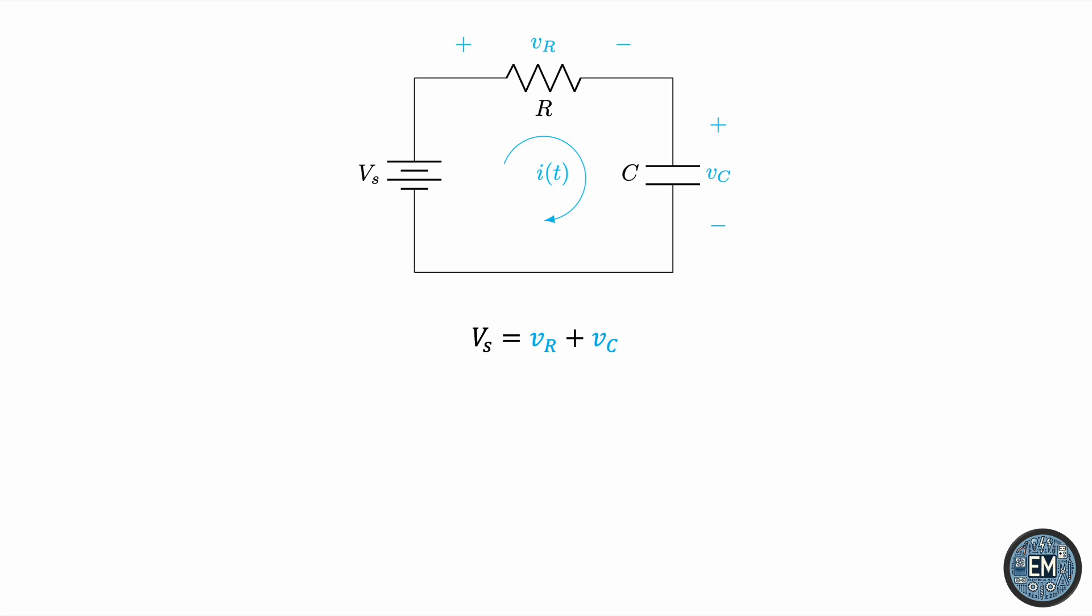VR by Ohm's law is given by the resistance times current. Because the resistor and capacitor are in series, this current must be the same current flowing through the capacitor, or to be precise, the displacement current of the capacitor, which is given by the capacitance times the time derivative of the voltage. So substituting this back into the original equation, we can see that we have a first-order differential equation in VC.